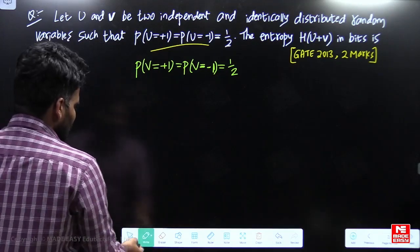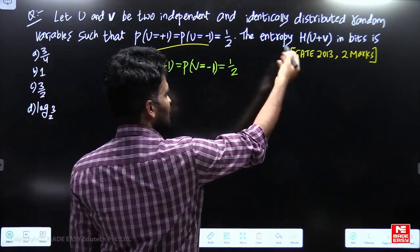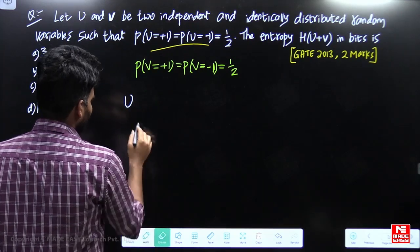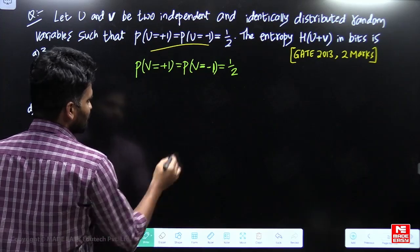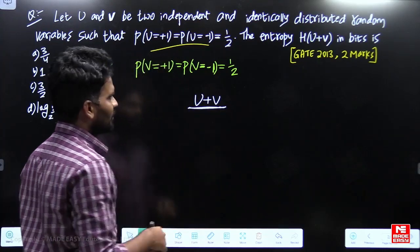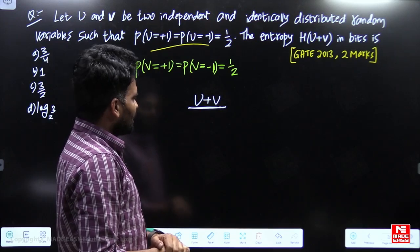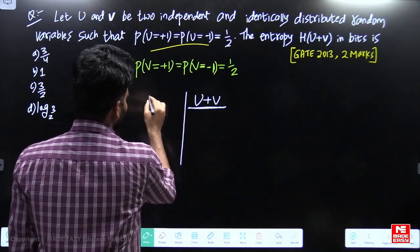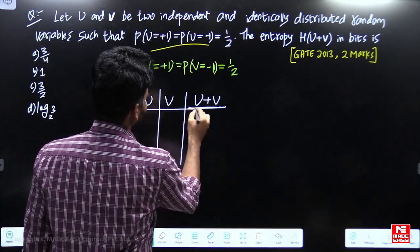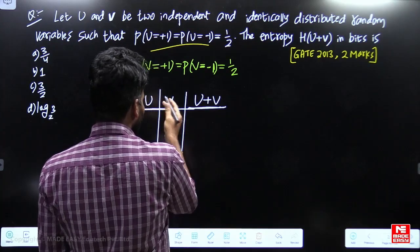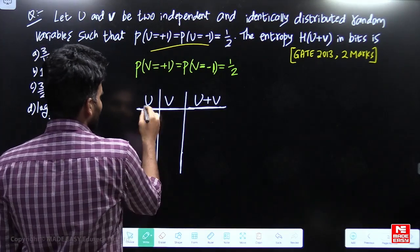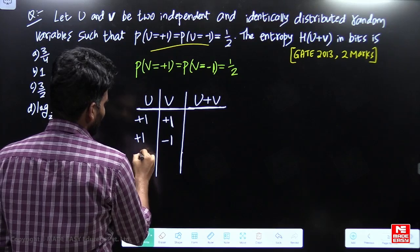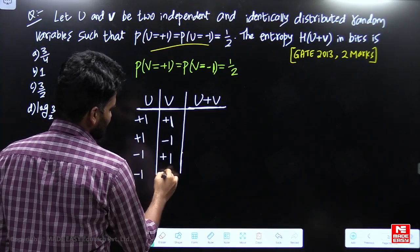Now let's find what values are possible for u+v. Since u can be +1 or -1 and v can be +1 or -1, the different combinations are: u=+1, v=+1; u=+1, v=-1; u=-1, v=+1; and u=-1, v=-1.